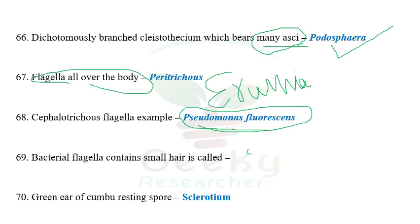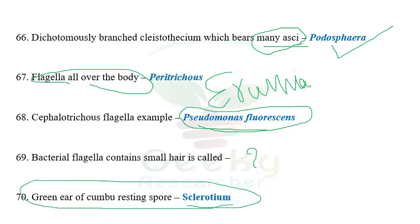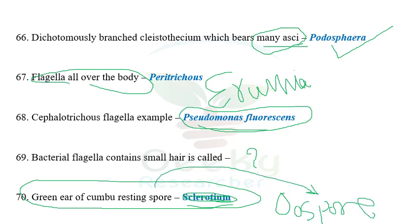The next question: bacterial flagella containing a small hair is called — possibly fimbriae or pili; I'm not sure. The next question: resting spore of green ear of bajra (downy mildew of pearl millet) — it is an oospore, not sclerotium. Downy mildew fungi do not produce sclerotia; they produce oospores. The oospore is the resting spore that can survive in soil for many years because it contains enormous food reserves to survive unfavorable environmental conditions.